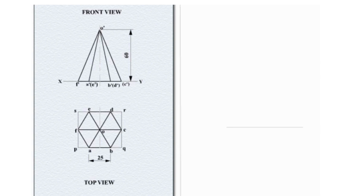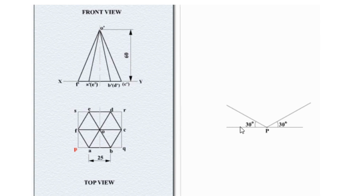First, draw a horizontal line and mark the point capital P on the reference line. Draw the isometric axes at capital P — 30 degrees to the left side and 30 degrees to the right side of the point — to mark the angled lines for the isometric box.